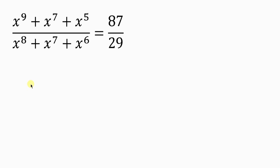What's going on everybody? Welcome back to my YouTube channel. We have this question on the board which says: find the value of x for which x to the power of 9 plus x to the power of 7 plus x to the power of 5, all over x to the power of 8 plus x to the power of 7 plus x to the power of 6, equals 87 over 29.